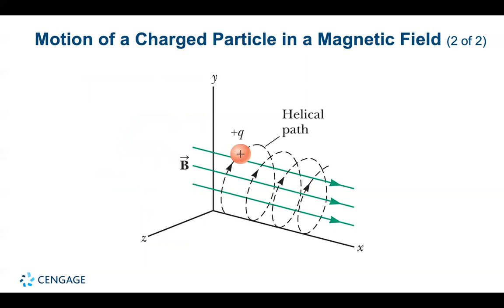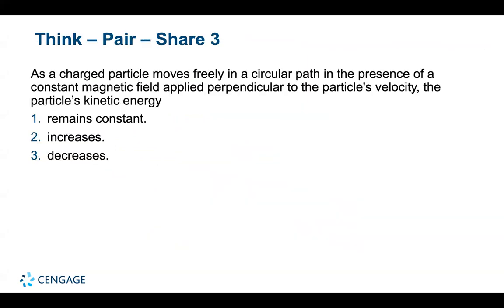If the initial velocity of a charged particle is not perpendicular to the magnetic field, the path followed is a spiral called a helix along the magnetic field lines. Question: as a charged particle moves freely in a circular path in the presence of a constant magnetic field applied perpendicular to the particle's velocity, the particle's kinetic energy remains constant. The magnetic force acting on the particle is always perpendicular to the velocity and hence to the displacement, so the force does no work and kinetic energy remains constant.